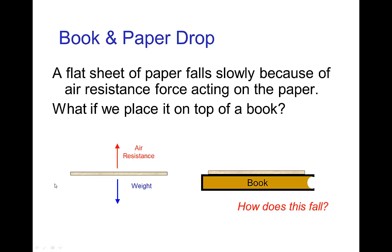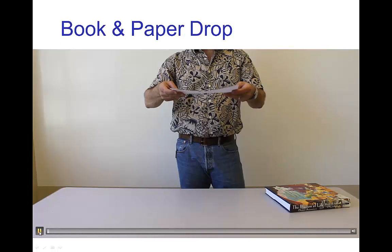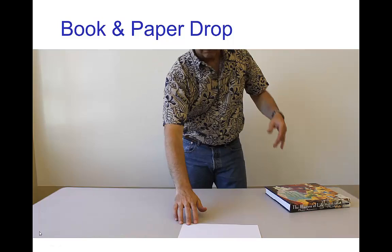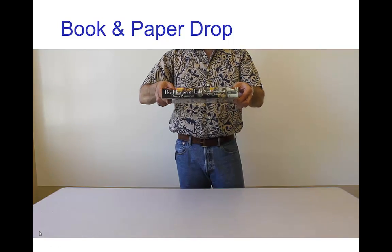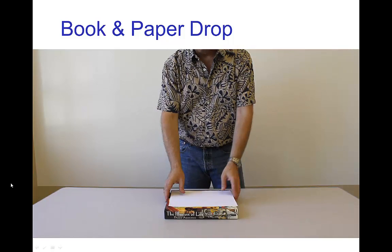Let's think about a related question. We have a flat sheet of paper, and we know that when you drop it, it drifts down rather slowly because of air resistance. But suppose we place the sheet of paper on top of a book - how would it fall? Let's look at a quick video of that. Here's just the sheet of paper. And now we place it on top of a book, and you see they fall together.